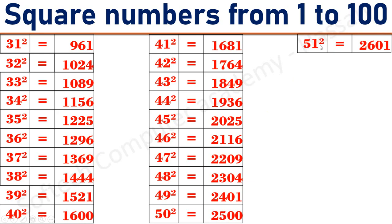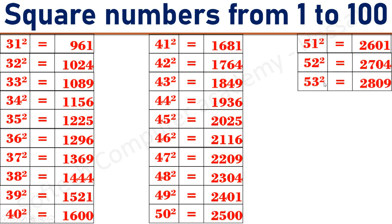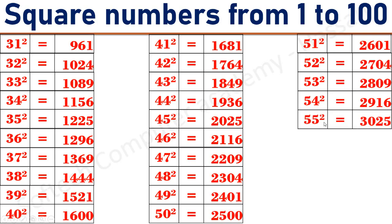51 square equals 2601. 52 square equals 2704. 53 square equals 2809. 54 square equals 2916. 55 square equals 3025. 56 square equals 3136.